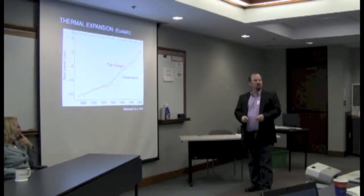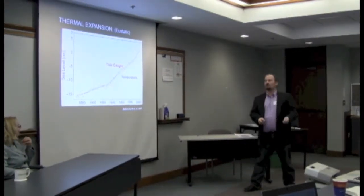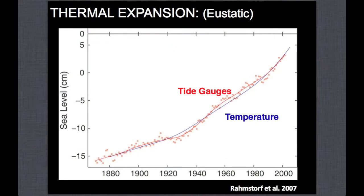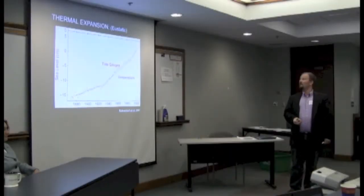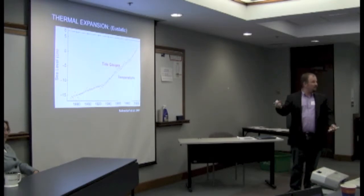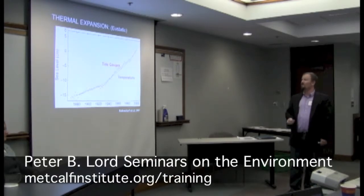Thermal expansion is pretty straightforward. When you see projections of future sea level rise, this is the more well-understood component. Temperature goes up, sea level goes up. This is a great paper by Rahmstorf et al. in 2007—hard to believe it's now five years old. He took a semi-empirical, almost qualitative approach—there's a differential equation in there—to say when temperature goes up, sea level goes up. Warmer water takes up more room. That's only part of it, though.